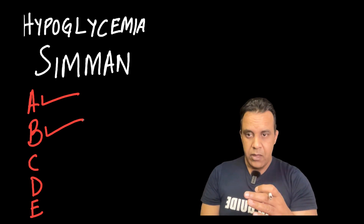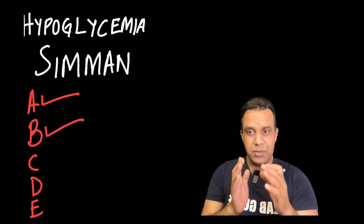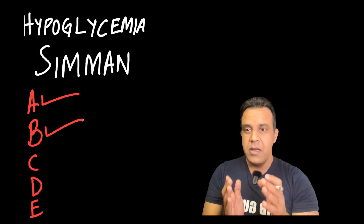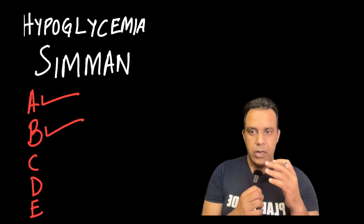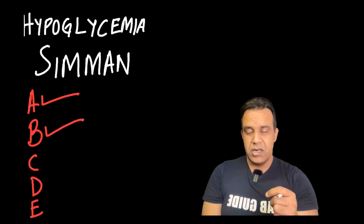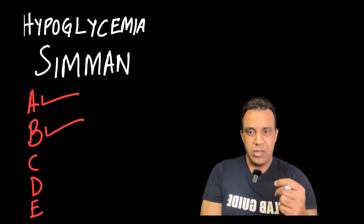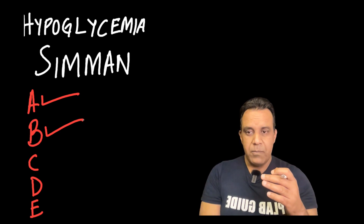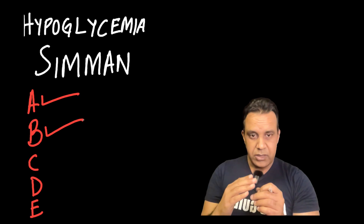Continue repeating glucose monitoring until it reaches 4 or above. The patient will require further assessment including routine investigations and HbA1c. Refer the patient to the diabetic team, the diabetes specialist nurse, and the endocrinologist. Look into the drug chart for any alterations needed, refer to the dietitian if diet assessment is required, refer to the SALT team if swallowing assessment is needed, and reduce insulin dose if it is too high.